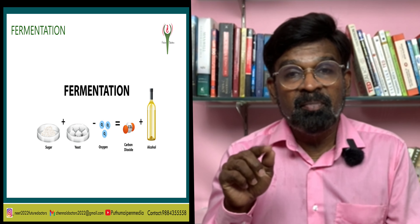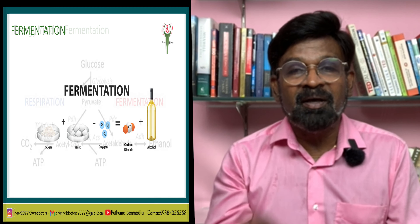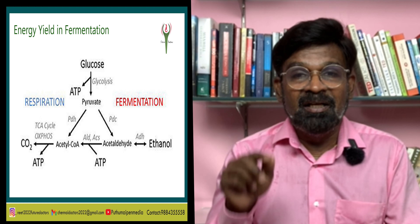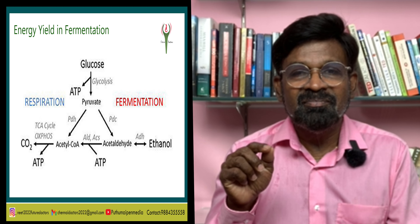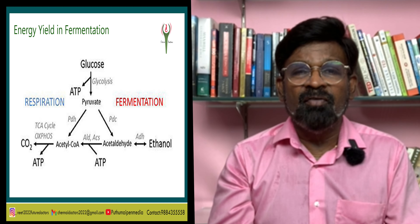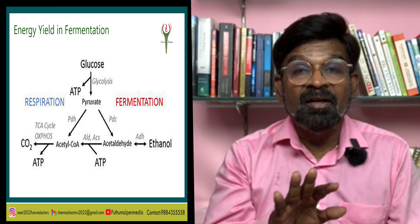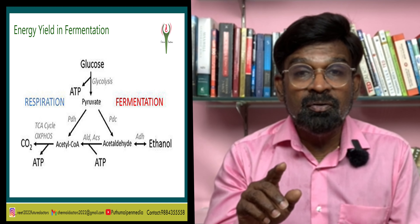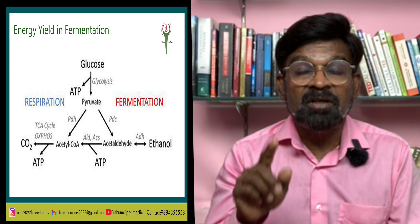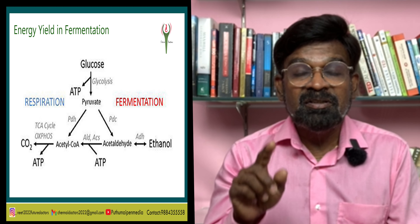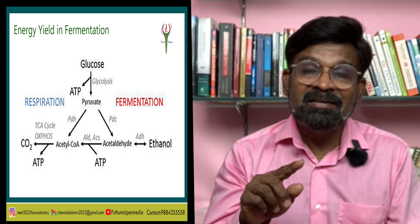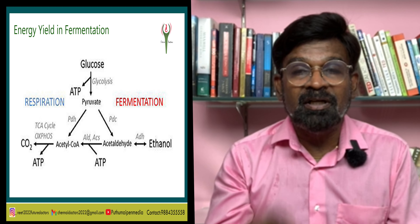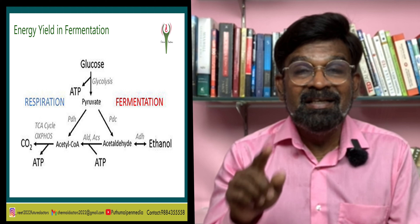In both alcoholic and lactic acid fermentation, oxidation of the reducing agent NADH + H⁺ takes place. The energy released is very little — not more than 7% of energy is released from glucose, and none of it is trapped as high-energy bonds of ATP. Fermentation processes are hazardous because either acid or alcohol is produced. Yeast may even poison itself to death if alcohol concentration reaches about 13%.